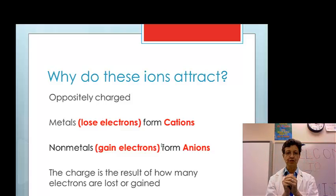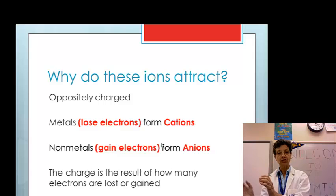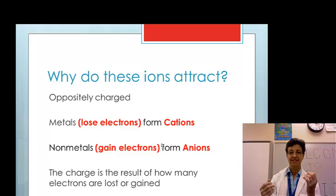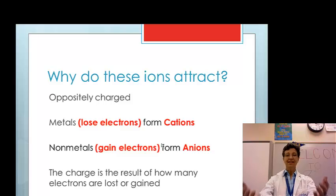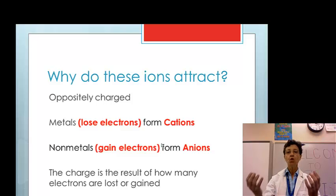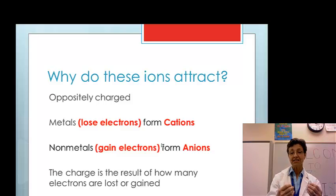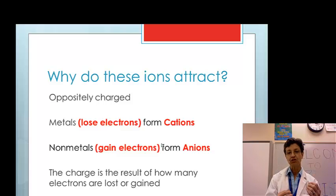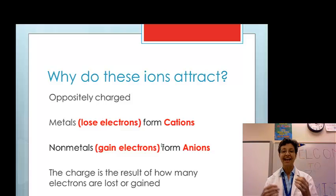Who gains and who loses? Metals tend to lose electrons. They form cations. When they lose electrons, they have more protons than electrons. That means they become positively charged. Cations. Non-metals tend to gain electrons. When they gain electrons, they become more negatively charged and they're called anions. A positively charged atom is called a cation and a negatively charged atom is called an anion.